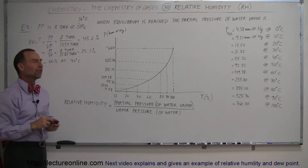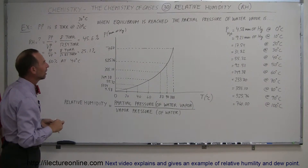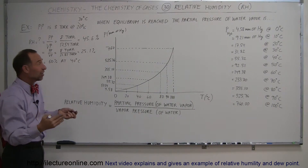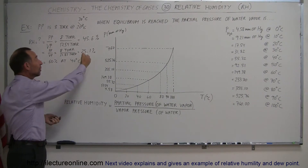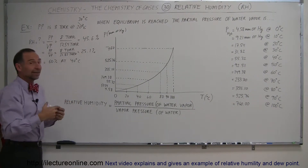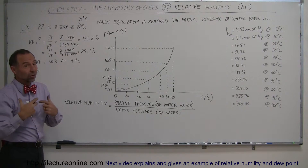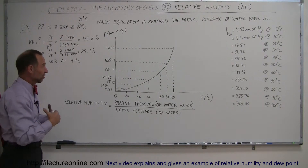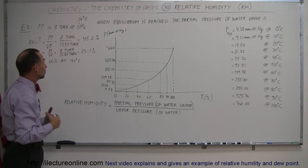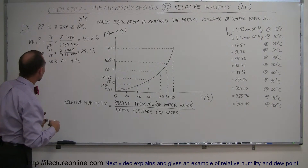So if someone says the relative humidity is 50% and it's 30 degrees outside, you know there's a lot of moisture in the air and it's going to be very, very humid and sticky.